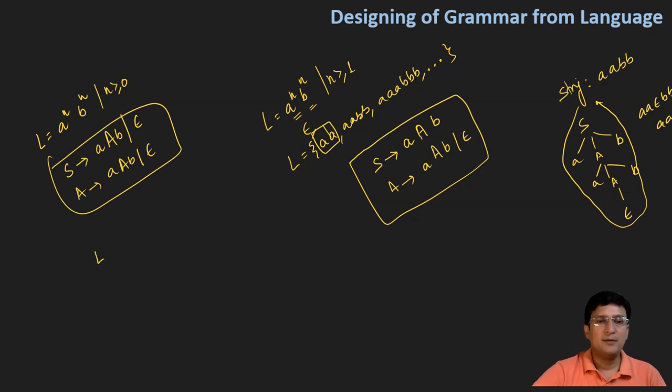Now let's say I have a language and that language says that a power n and b power 2n, where n is greater than or equal to one. So the language set will be such that we will say the number of a's will be double the number of b's. If a is 2, then b is 4 and so on and so forth.